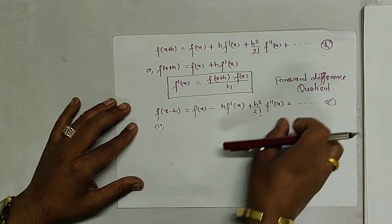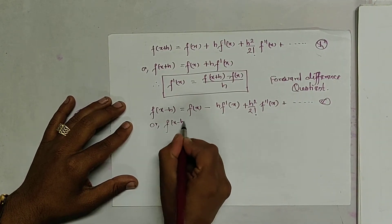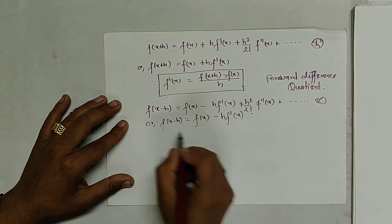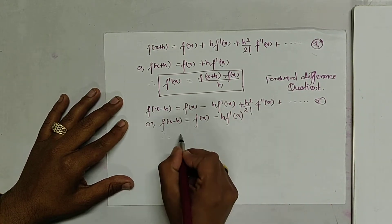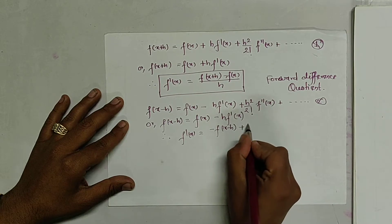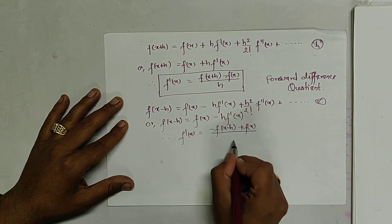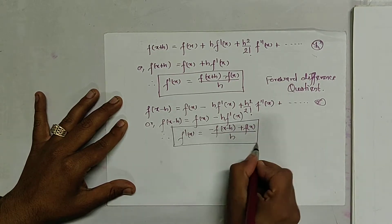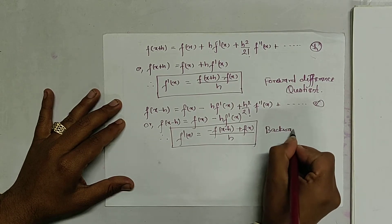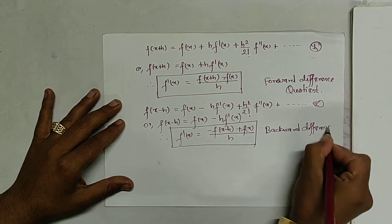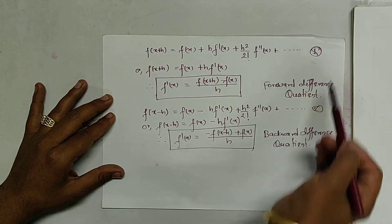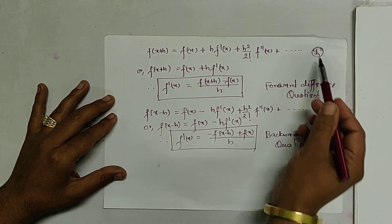Using a similar process, we neglect the higher power of h. It gives f(x-h) equals f(x) minus h·f'(x), so we get f'(x) equals [f(x) minus f(x-h)] divided by h. This is the formula to find the first order derivative of a function, and it is known as the backward difference quotient.